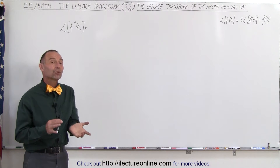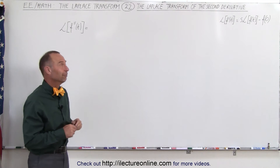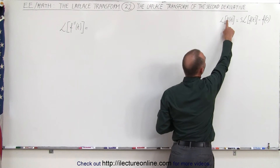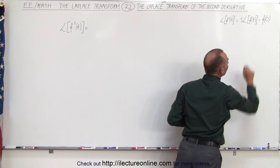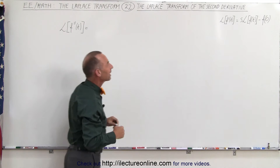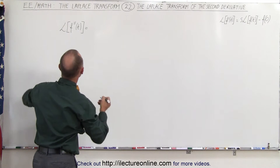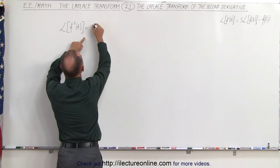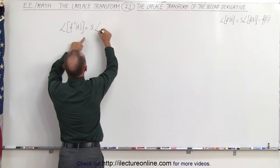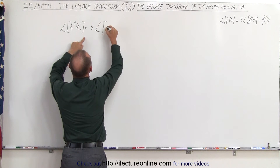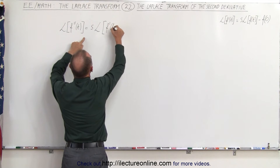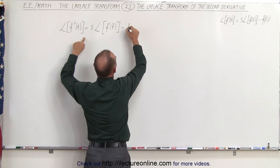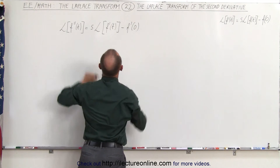We work backwards using the equation of the first derivative. What we can do is make this double prime, then this single prime, and this single prime — that's the technique we're going to use. So this can now be written as follows: it equals s times the Laplace transform of the first derivative of the function of t, minus the first derivative evaluated at zero.